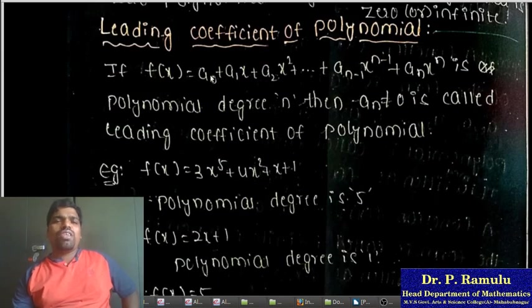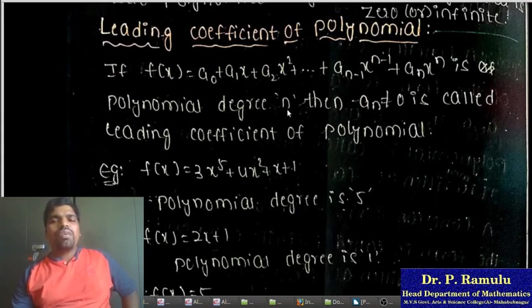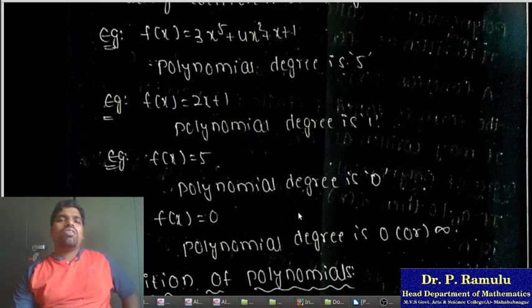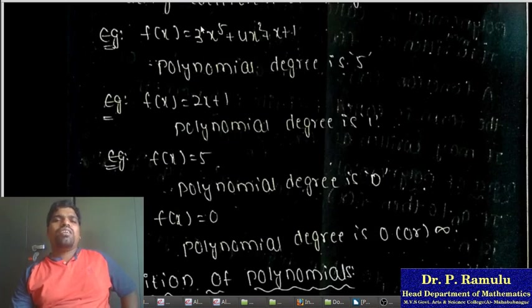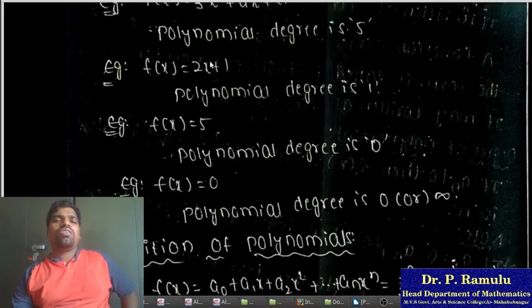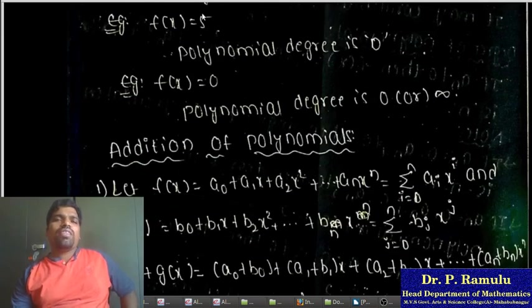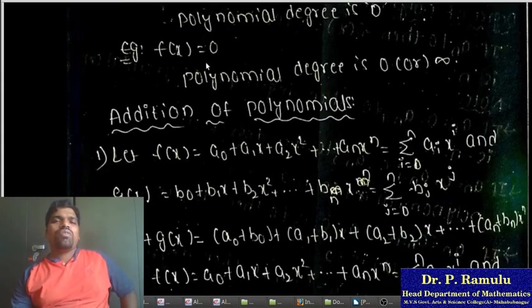What is the leading coefficient? If f(x) = a_0 + a_1 x + a_2 x^2 + ... + a_n x^n is a polynomial of degree n, then a_n (where a_n ≠ 0) is called the leading coefficient. Example: f(x) = 3x^5 + x + 1; the degree of the polynomial is 5 and 3 is the leading coefficient. f(x) = 5 is a constant polynomial of degree 0. f(x) = 0 is the zero polynomial; its degree is 0 or infinity.